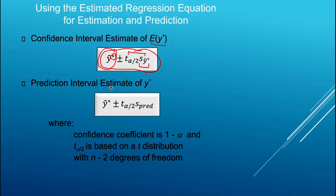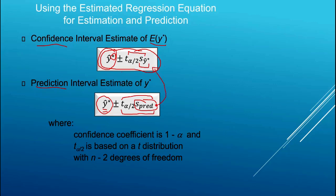We multiply t-alpha-over-2 by the standard deviation of y-hat-star. This margin of error for the confidence interval will be smaller than the margin of error for the prediction interval. The point estimate is the same in both cases; it's the margin of error that differs. For the prediction interval we use t-alpha-over-2 multiplied by s-sub-pred, which is a larger standard deviation than s-sub-y-hat-star, because it accounts for variation in the error term.